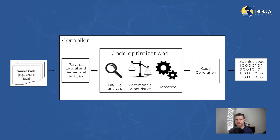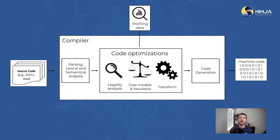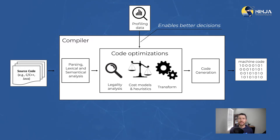Just to give you an example, for unrolling a loop, it's crucial to know how many iterations the loop will make. And so this is where the profiling information becomes handy. If we could give that knowledge to the compiler, then it will be able to make much better optimization decisions.